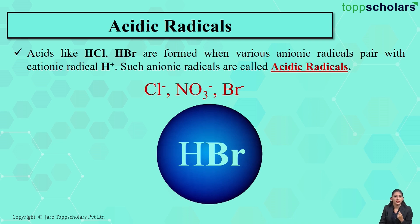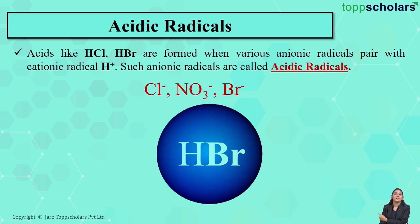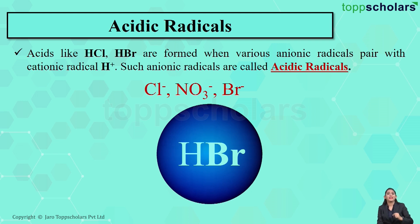So as we saw, Cl⁻, NO3⁻, and Br⁻ — which are anionic radicals — they paired up with the H⁺ radical, that is the cationic radical, and what did we get? Acids. Since these anionic radicals paired up with the H⁺ radical and gave us acids, we say that these anions are nothing but acidic radicals. So acidic radicals are simply anionic radicals which pair up with the cationic radical H⁺ to give acids.